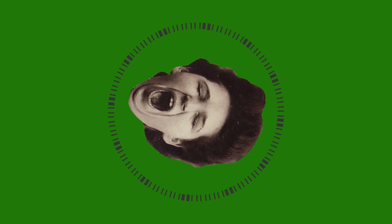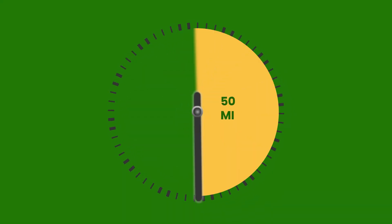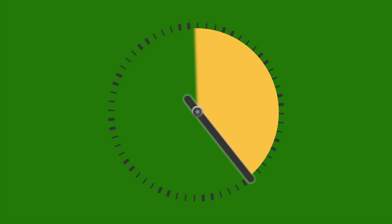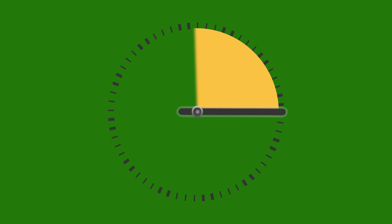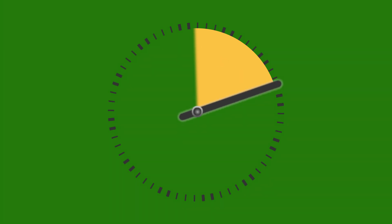Let's imagine an hour having 100 minutes and each minute having 100 seconds. Half an hour would correspond to 50 minutes. One-third of an hour would correspond to 33.3333 minutes. One-fourth of an hour would correspond to 25. One-fifth of an hour would correspond to 20. And one-sixth of an hour would correspond to 16.666 minutes.